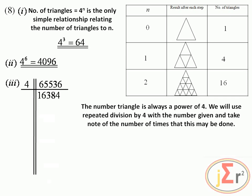Dividing 65,536 by 4 we get 16,384. Dividing by 4 again we get 4,096. Realizing that dividing by 4 gives 4096, which is what we have for n=6, we know we should have another 6 divisions. We have 2 here, so we should have 8 total.